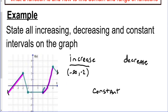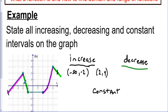The second increasing section starts at 2 and ends at 4, so there's also an interval of increase from 2 to 4. For the decreasing intervals, the graph goes downhill in two places: from negative 2 to negative 1, and then from 4 going forever to the right, so we write positive infinity as the right endpoint.